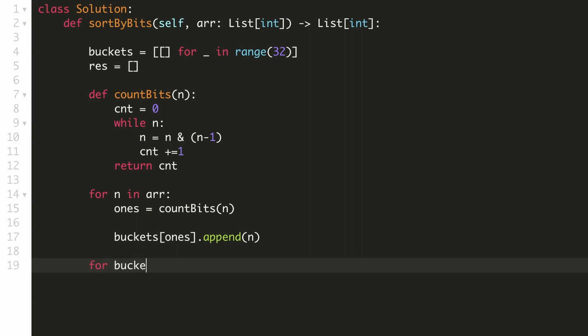Once we have created our buckets, we'll start from the lowest bucket and sort all the entries in ascending order. And once we have the sorted bucket, we can add it to the list using this extend function. If we don't use this extend function, then in that case we'll have to iterate over this bucket and then add the elements individually. Now we can return our result. We are done with our solution.